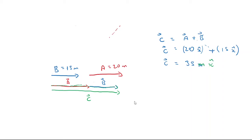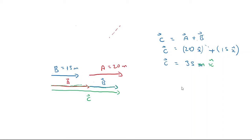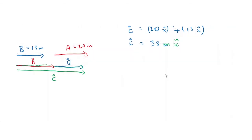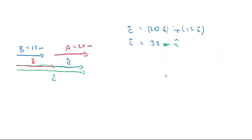This is how you add collinear vectors. This is the same even if the vectors are in the y direction. Now the question is: what happens if they are in opposite directions? As long as they are in the same direction you just add them and the magnitude becomes bigger, but what happens if they are in opposite directions?